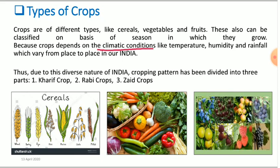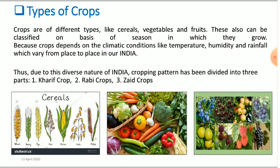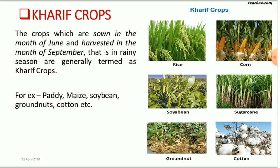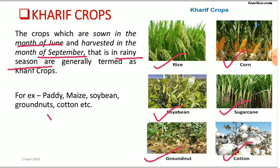These crops are dependent on climatic conditions — like temperature, humidity, and rainfall. In India, which is a very vast country, temperature, humidity, and rainfall vary from one place to another. That's why the cropping pattern has been divided into three main types: Kharif crop, Rabi crop, and Zaid crop. Kharif crops are sown in the month of June and harvested in September — they are rainy season crops needing a large amount of water. Examples include rice, corn, soybean, sugarcane, groundnut, cotton, and maize.